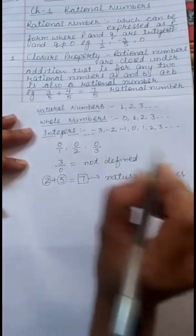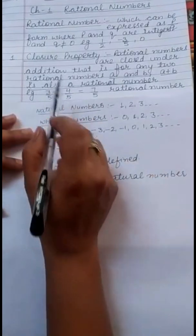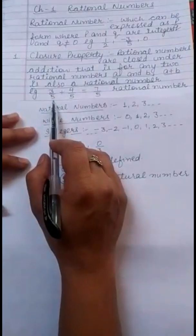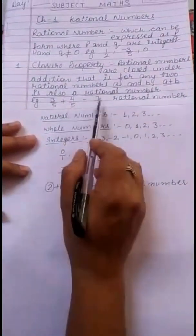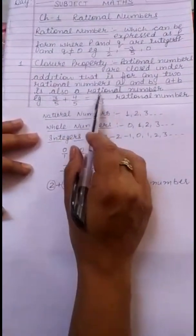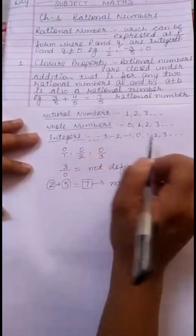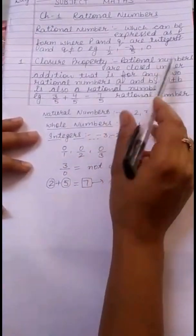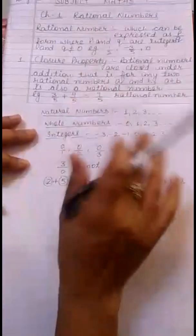So we can say that natural numbers are closed under addition. Similarly, for rational numbers: 3 by 5 plus 4 by 5 gives a sum that is again a rational number. So we can say that rational numbers are closed under addition.